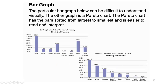You can also arrange the bar graph. A particular bar graph that is not sorted can be difficult to understand visually — showing Asian, Black, Filipino, and Native Americans in a confusing arrangement. The better option is the Pareto chart. The Pareto chart has the bars sorted from largest to smallest, making it easier to read and interpret. This is better than a regular bar graph which is not in a clear shape.